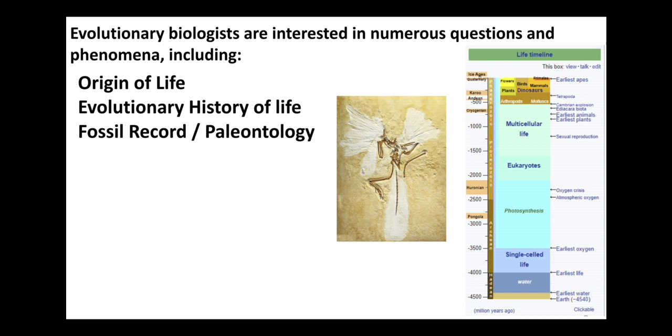So once we have multicellular life, once we start having animals, we can start to develop fossils, and we can use that to piece together our understanding of how life changed over time and what are the origins of the organisms that are alive now.